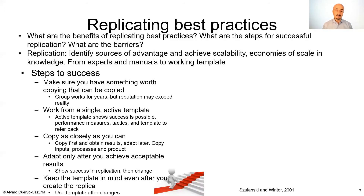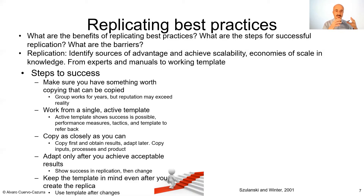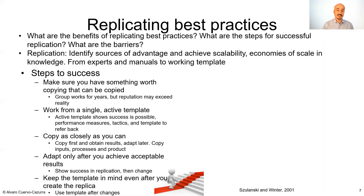What are the recommended steps for success? First, start with something that is worth copying — identify the sources of advantage, the best practice. Then identify it and try to replicate it. Work from a single active template: don't go into different places, understand what is happening here and what the potential of this set of activities is. If something is not working well, go back to the same place to understand — go back and try to see how they are solving this. Copy as closely as you can. We have a tendency to say: 'This is how we do things, that's how they do things — I'll just do it the way I want.'